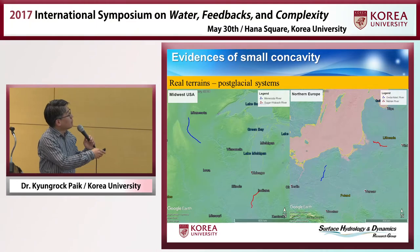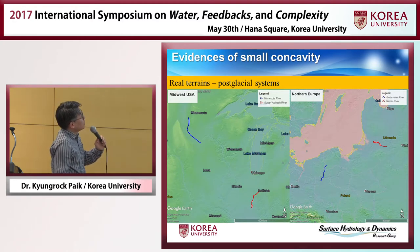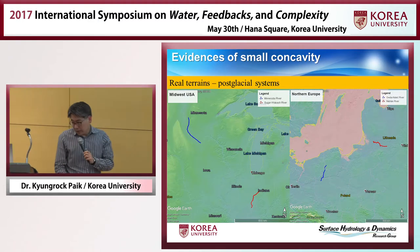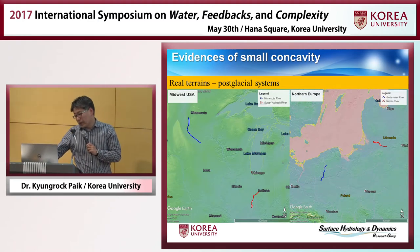For the real world, we looked at post-glacial systems. Good examples are found near the Midwestern U.S. near the Great Lakes and at similar latitudes in northern Europe. We analyzed two rivers — the Minnesota River and Wabash River in Indiana — and two rivers in Poland and Lithuania. Their longitudinal profiles are really flat: theta values can be, in reality, very small, like 0.07 or 0.01.